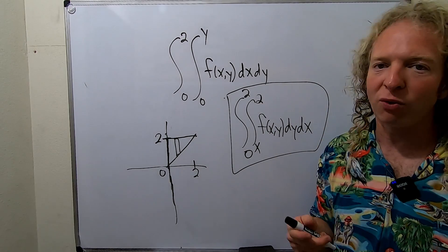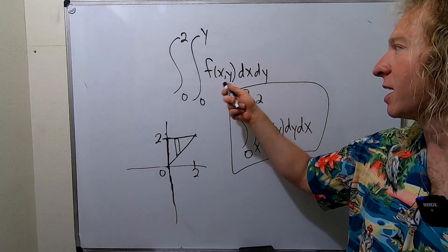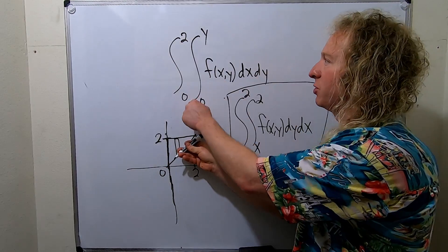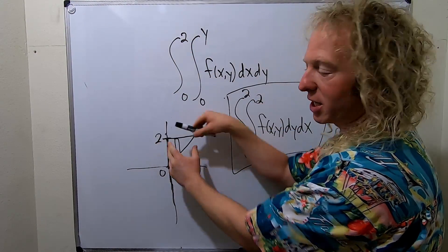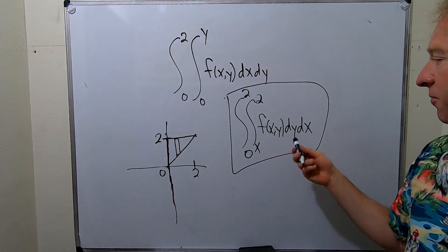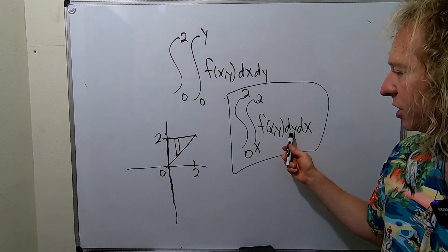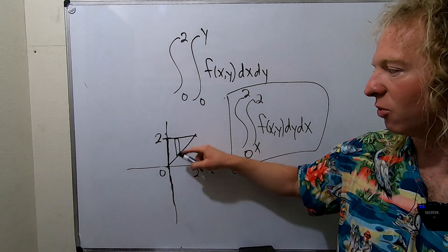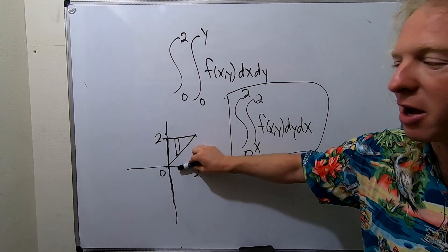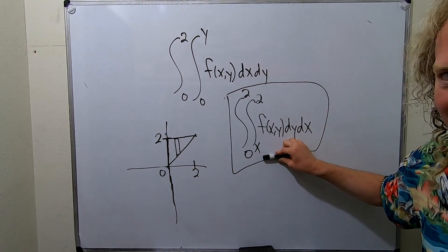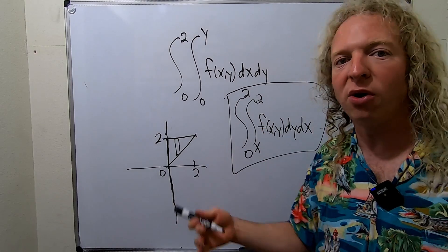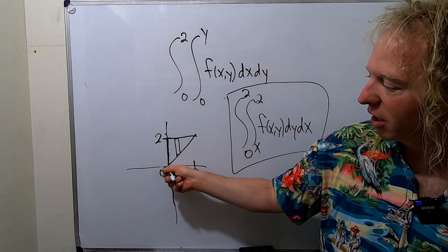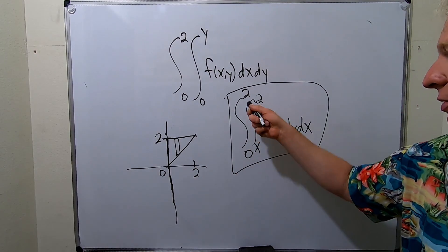Let me go through the whole thing one more time. First we're going from x equals 0 to x equals y, and then y equals 0 to y equals 2 — that gives us the triangle region. Then we're changing the limits: first we're doing dy, so we're going from x to 2 — you can think of it as top minus bottom, 2 on top and x on the bottom. Both ways of thinking work and will always give you the right answer. Then x from the picture is going from 0 to 2.